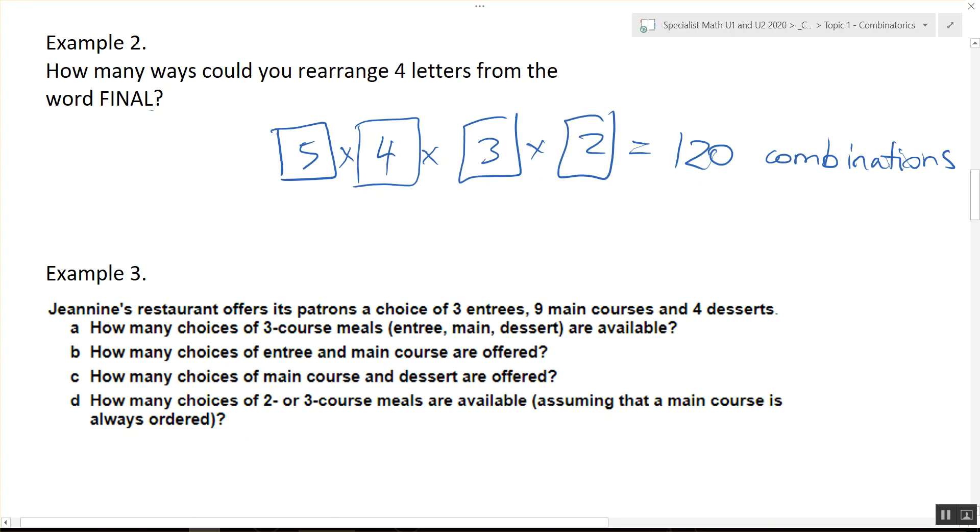If you're at a restaurant, there's three entrees, nine main courses, four desserts. How many three-course meals are available? What are we going to do? Multiplication principle. So entree, how many entrees are there? Three. Then we'll get a main. How many mains? Nine. And then we'll get a dessert. How many desserts? Four. Very good.